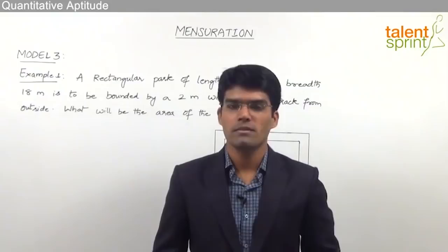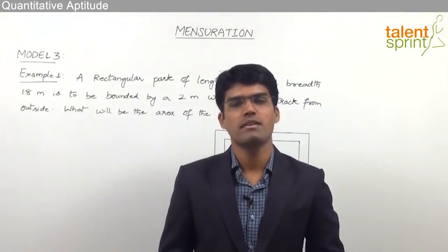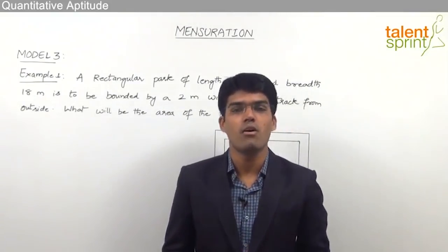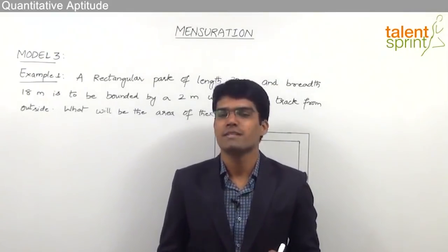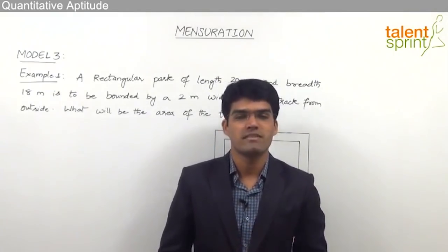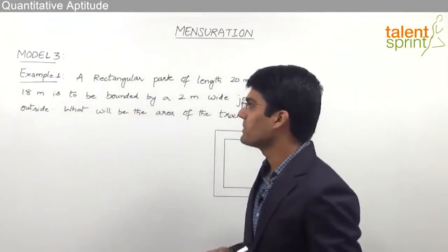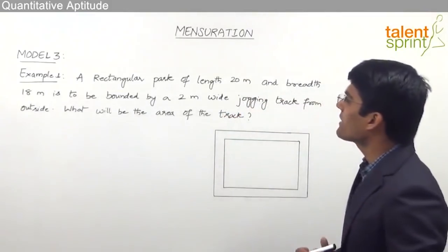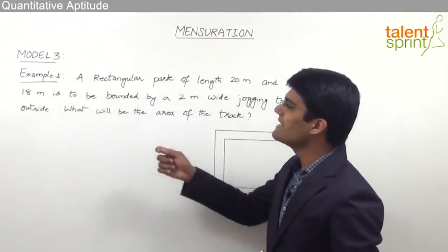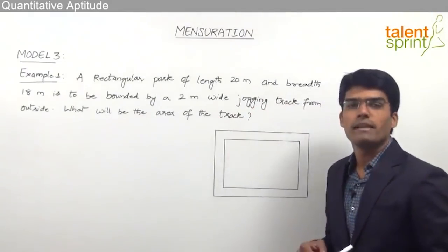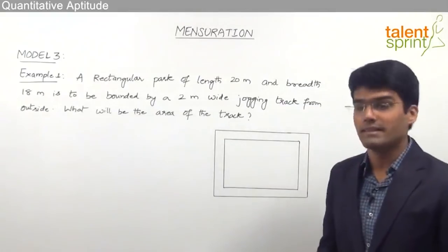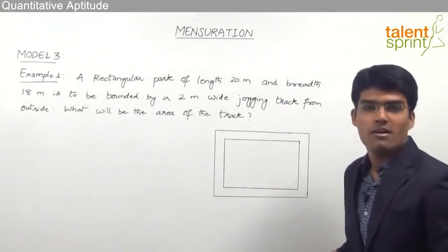Let us now take the third model from the topic of mensuration, where we should discuss questions related to finding the area of a footpath or garden which has been constructed outside or inside of a two-dimensional shape. Let us look at the first example. A rectangular park of length 20 meters and breadth 18 meters is to be bounded by a 2-meter wide jogging track from outside. What will be the area of the track?